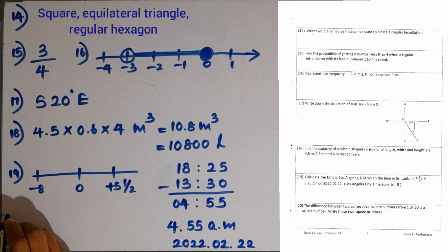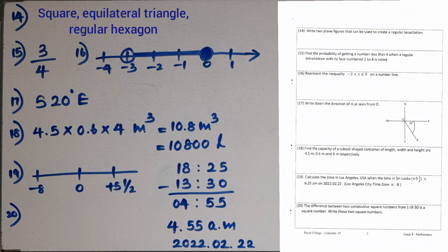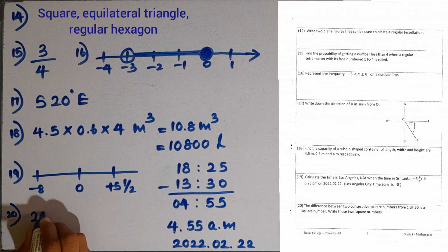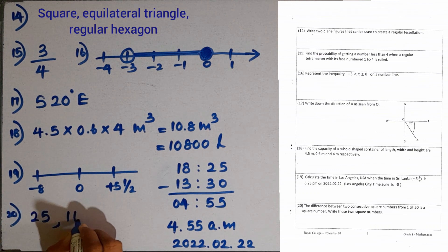Question number 20. The difference between 2 consecutive square numbers from 1 to 50 is also a square number — write those two square numbers. The numbers are 25 and 16. The difference is 9, which is also a square number. So 25 and 16 are the answer.